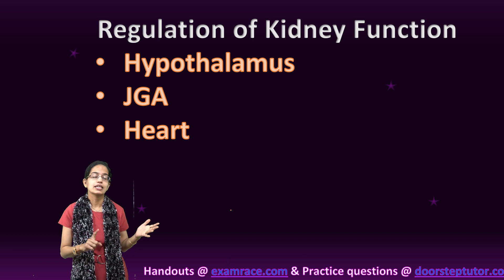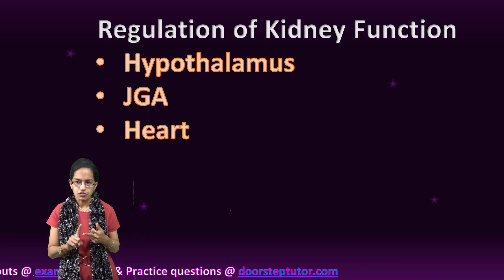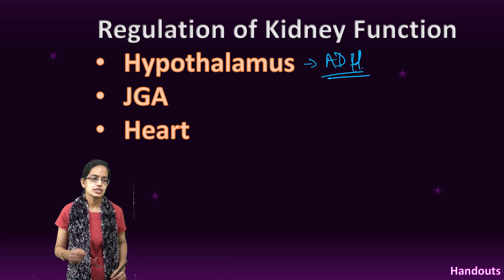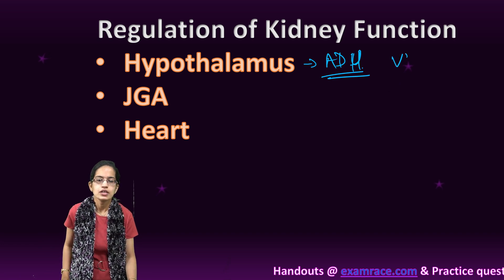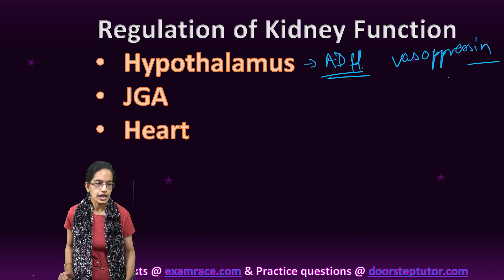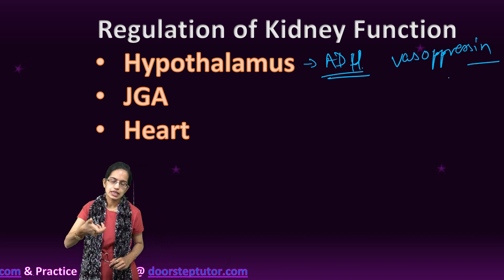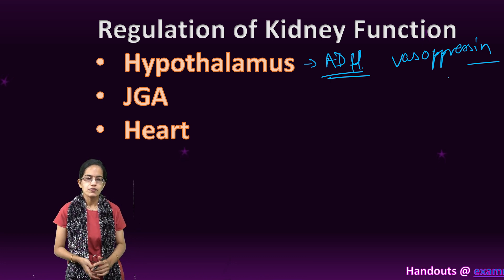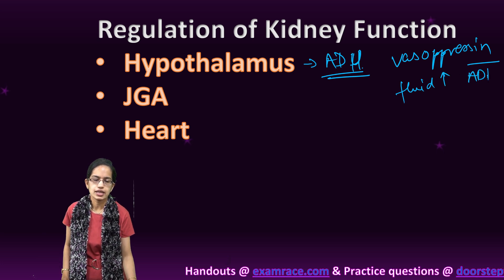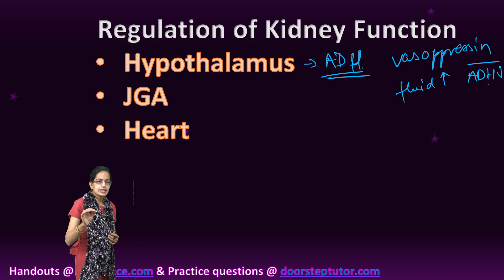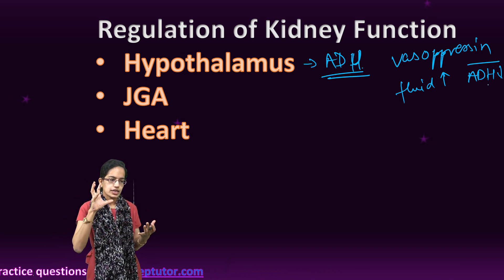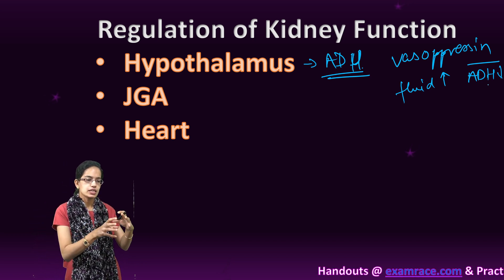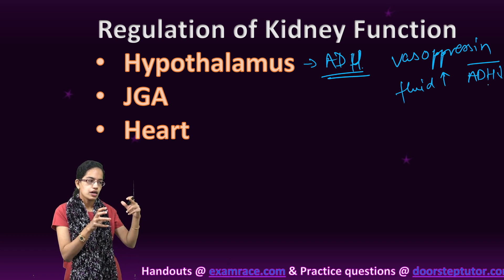The kidney's functioning is regulated by the hypothalamus, the juxtaglomerular apparatus, and the heart. The hypothalamus releases ADH, the anti-diuretic hormone, responsible for vasopressin secretion. ADH facilitates water reabsorption in the later part of the tubule and therefore prevents diuresis. If body fluid increases, ADH decreases. ADH also acts as a vasoconstrictor of blood vessels, increasing blood pressure and the glomerular filtration rate and blood flow.